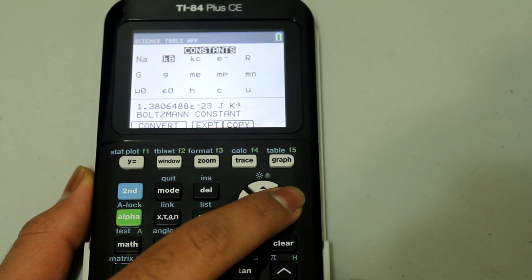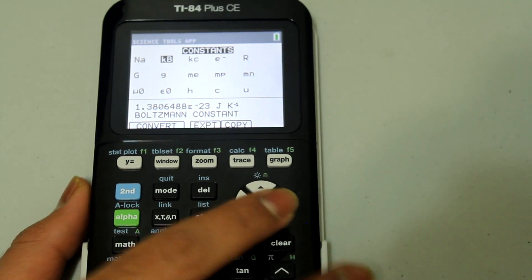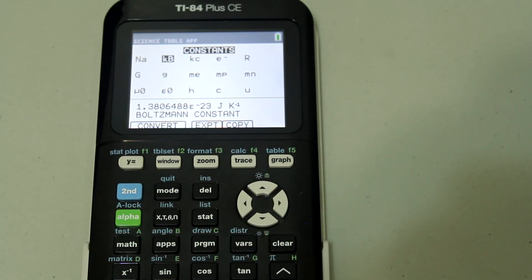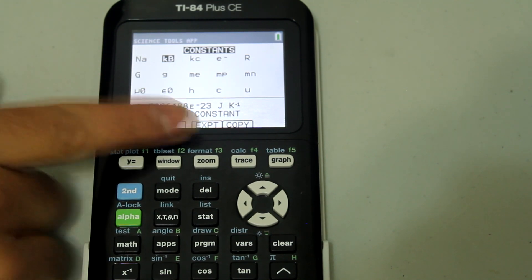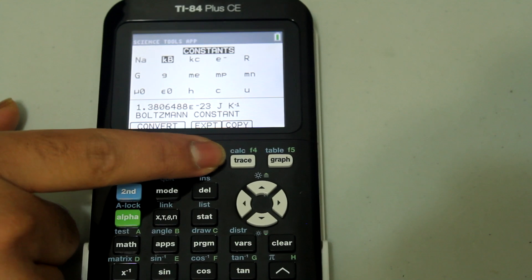Avogadro's constant, Boltzmann constant, and etc. And let's say you wanted to use one of these for a calculation. And to export it to the home screen, hit the button under EXPORT, which is ZOOM, and then second mode.